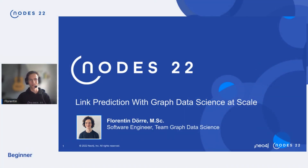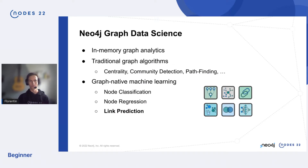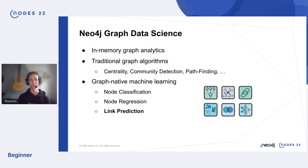I'm on the Graph Data Science team working on the Graph Data Science product. Neo4j Graph Data Science lets you do in-memory graph analytics — taking data from a Neo4j database or other data sources and loading it into memory in a graph analytics-friendly format.